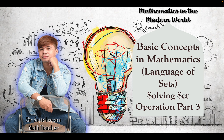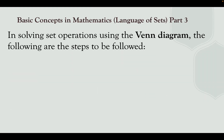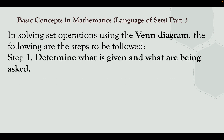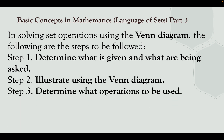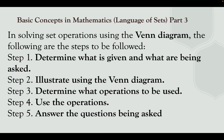This is part 3 of the language of sets. In solving set operations using Venn diagram, the following are the steps to be followed. First, we need to determine what is given and what is being asked. Second, we need to illustrate using the Venn diagram. Third, determine what operation to be used. Fourth, use the operations. And fifth, answer the question being asked. If you are already a master in doing these steps, you can directly draw the Venn diagram and answer the given questions.